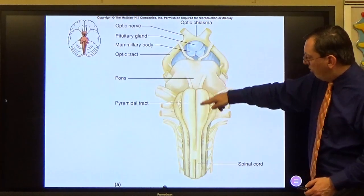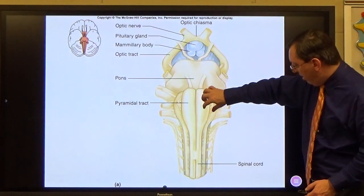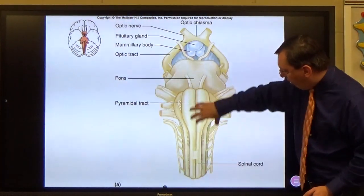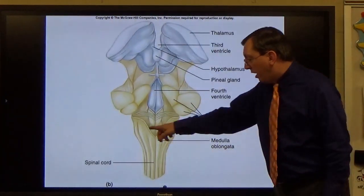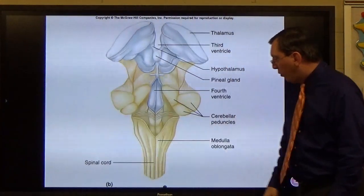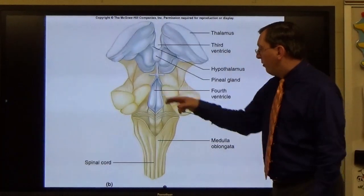So again, here's your pyramidal tracts. The pons is right here. This comes into the spinal cord right here, off this medulla oblongata down this way. The side view shows you the medulla oblongata here, so the shield shape coming into the spinal cord. Cerebral peduncles on both sides.